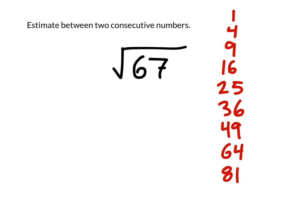So what this means is that the square root of 67, in terms of the numbers that I have listed here, if we looked at just the 67, it's greater than 64, but it's also less than that other perfect square, 81.